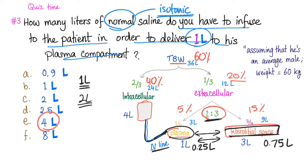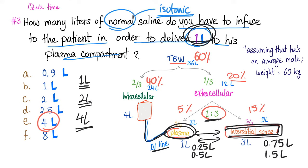If you infuse 2 liters, 1.5 liters goes to the interstitial space and 0.5 liters stays in plasma — still not 1 liter. When you infuse 4 liters, 3 liters stays in the interstitial space and 1 liter stays in the plasma. Therefore, 4 liters of normal saline is the correct answer to deliver 1 liter to the plasma compartment.